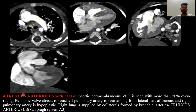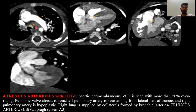The fourth case is truncus arteriosus with TOF. Here we can see a sub-aortic perimembranous VSD with more than 50% overriding of the aorta. Pulmonary valve atresia is seen in this case. The left pulmonary artery arises from the distal part of the truncus, and the right pulmonary artery is hypoplastic — thus the right lung is supplied by collaterals from the bronchial arteries. By the Van Praagh system, this falls under A3 classification.